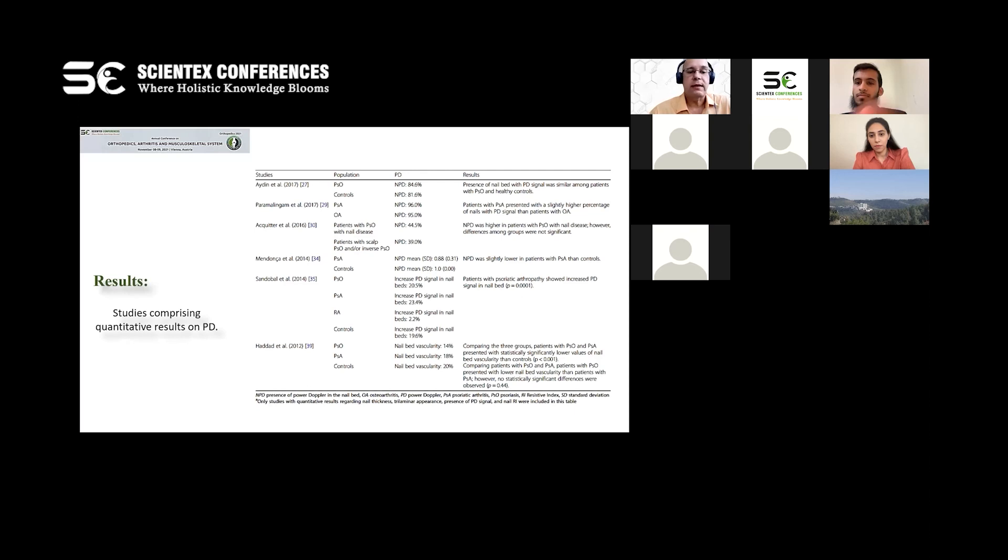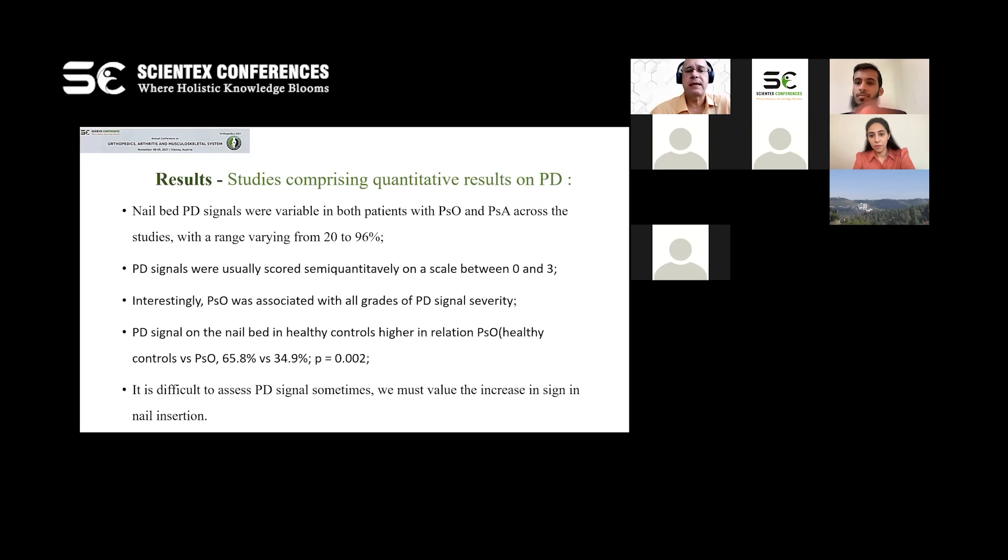The studies comprising quantitative results on PD. The observed PD signals were variable in both patients with PSO and PSA across the studies, which ranged varying from 20 to 96%.